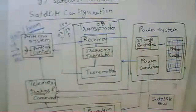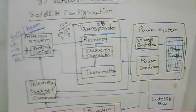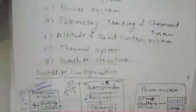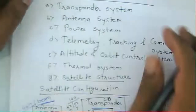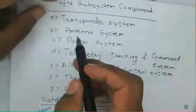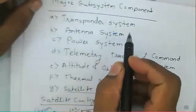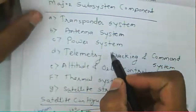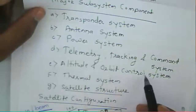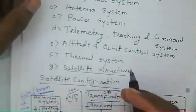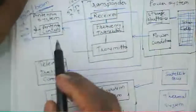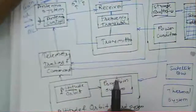Welcome to the satellite communication course. Today we learn about satellite subsystem components. The satellite subsystem components include a transponder system, antenna system, power system, telemetry tracking and control system, altitude and orbit control system, thermal system, and satellite structure. This is a block diagram of a satellite configuration.